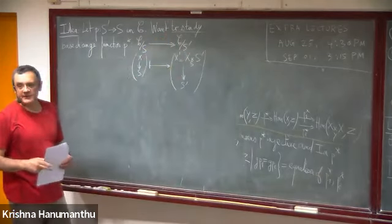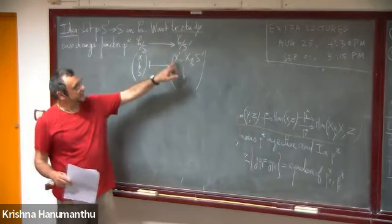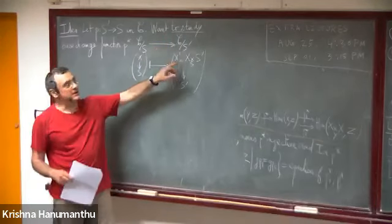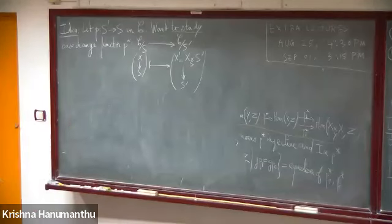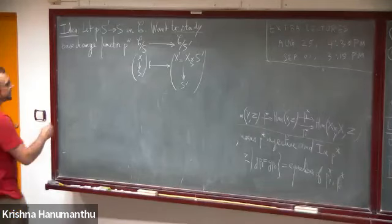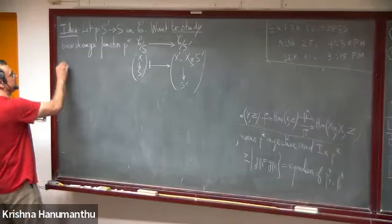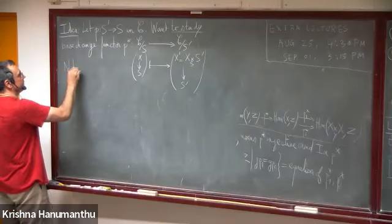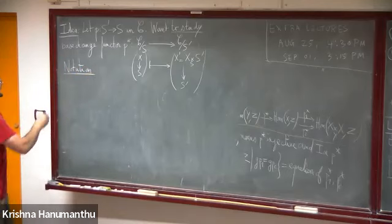When I say we want to study, the idea is to understand the essential image: given an object X' over S', how do we know if it is obtained by base change from an object over S? To make this study we introduce the following notation, which comes in two parts.